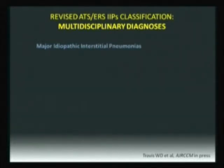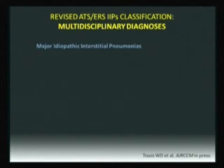This is the new classification of IIP — a very pragmatic classification, and I think it's a major result. The people involved were from different continents, nationalities, and backgrounds, but all of them wanted something practical in clinical terms. The first major category — major in terms of prevalence, epidemiology, and clinical impact — is, of course, IPF. IPF is the major player of the major IIPs.